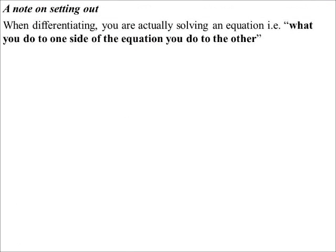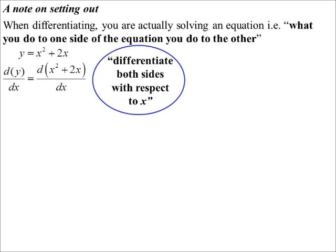A note on setting out: when differentiating, you're solving an equation, and the basic idea is what you do to one side, you do to the other. We write y = x² + 2x as our starting equation. What we're actually saying is: differentiate both sides with respect to x. On the left-hand side, differentiating y with respect to x gives dy/dx. On the right we know how to differentiate x² + 2x, giving 2x + 2.